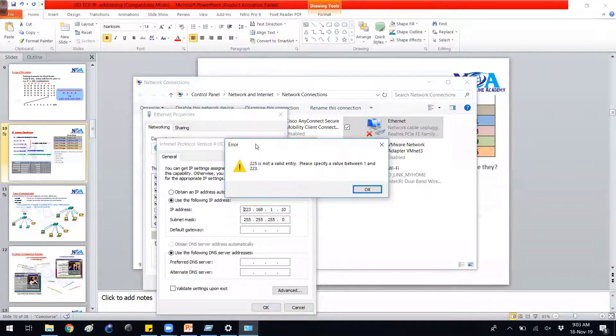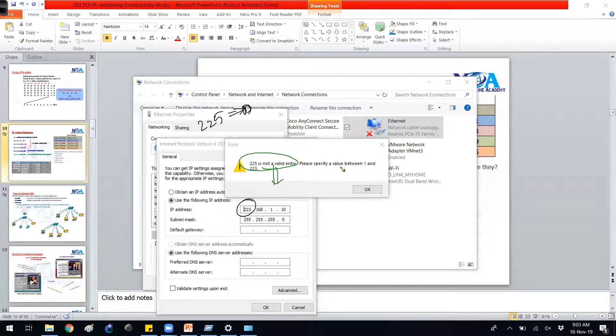So if I try to give any address like 225, you can see it clearly says that any address, if you are typing in 225, 225 comes under the Class D. So the value is not a valid entry, so please specify the values only between 1 and 223. Again, 0 is not used. We'll see that with our addresses.